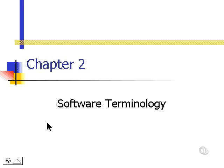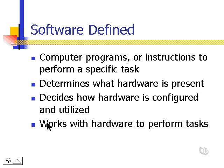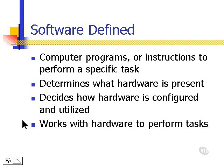Next, we'll discuss some software terminology. First, let's define software. Software is computer programs or instructions to perform a specific task. Software also determines what hardware is present, decides how hardware is configured and utilized, and works with hardware to perform tasks.